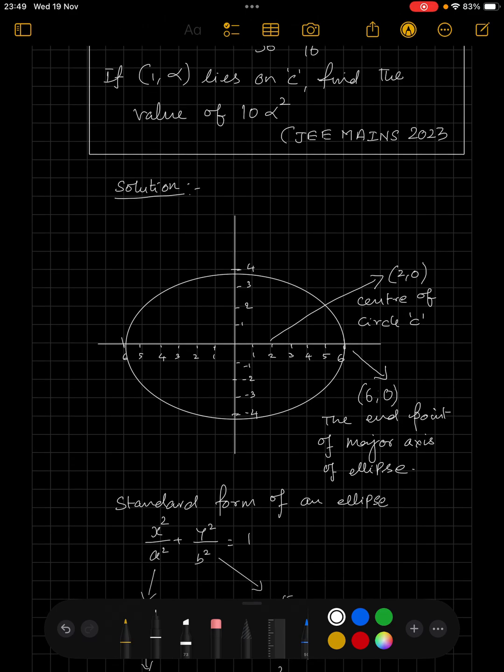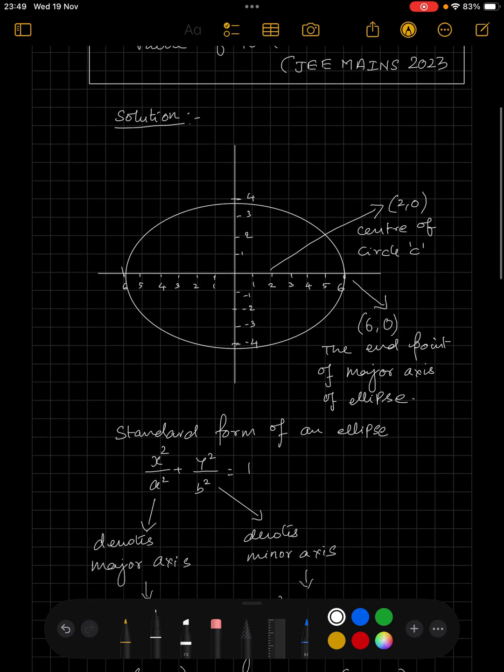The center of the circle is 2 units from the origin on the positive x axis and the end point of the major axis of the ellipse is 6 units from the origin. Therefore, the maximum possible value of the radius of the circle C is 4 units.